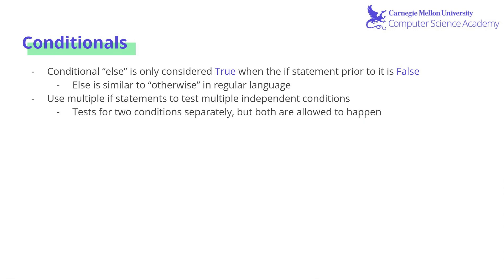Another conditional is else, which is only considered true when the if statement prior to it is false. An example could be if mouseX greater than 200, and the else would mean when mouseX is less than or equal to 200. It is very similar to otherwise in regular language. So, we go to the mall. Otherwise, we go to the beach. So if we're not going to the mall, we end up going to the beach.